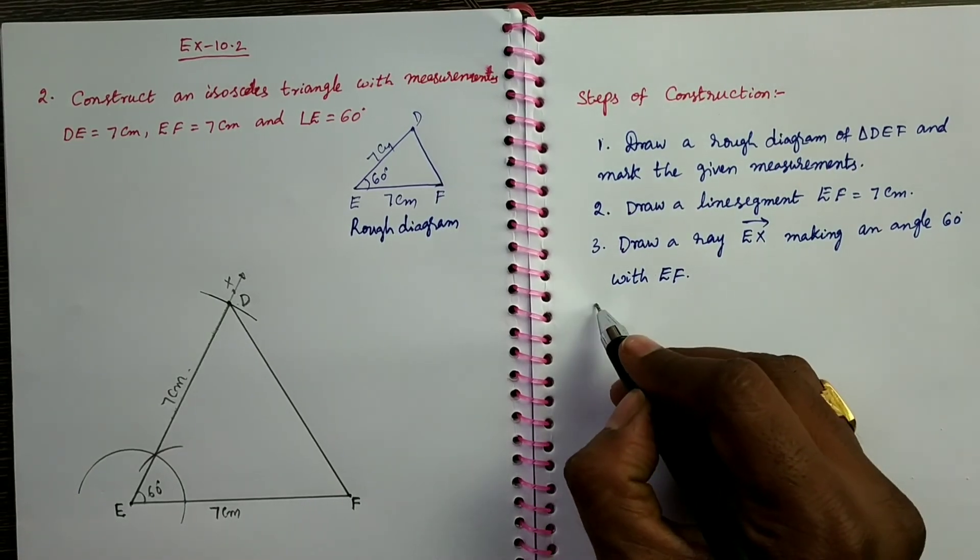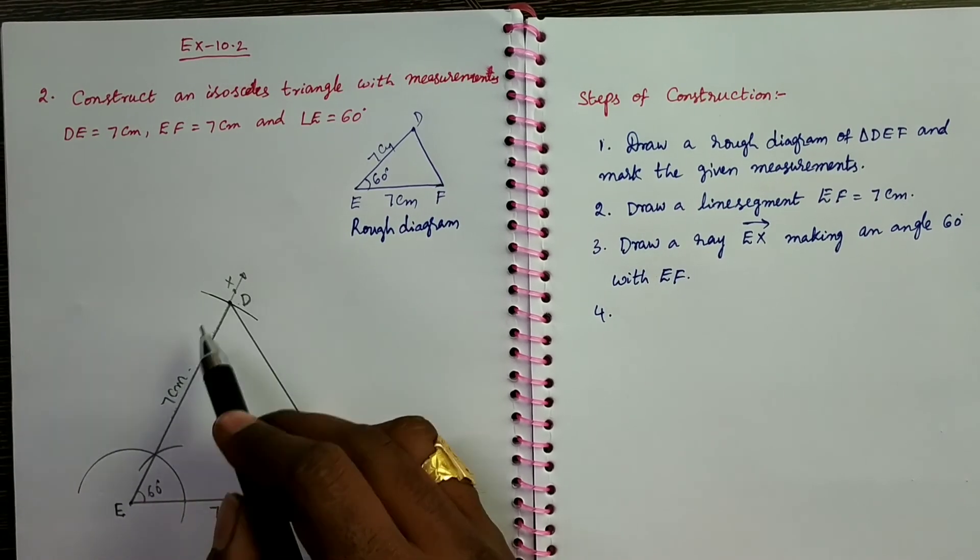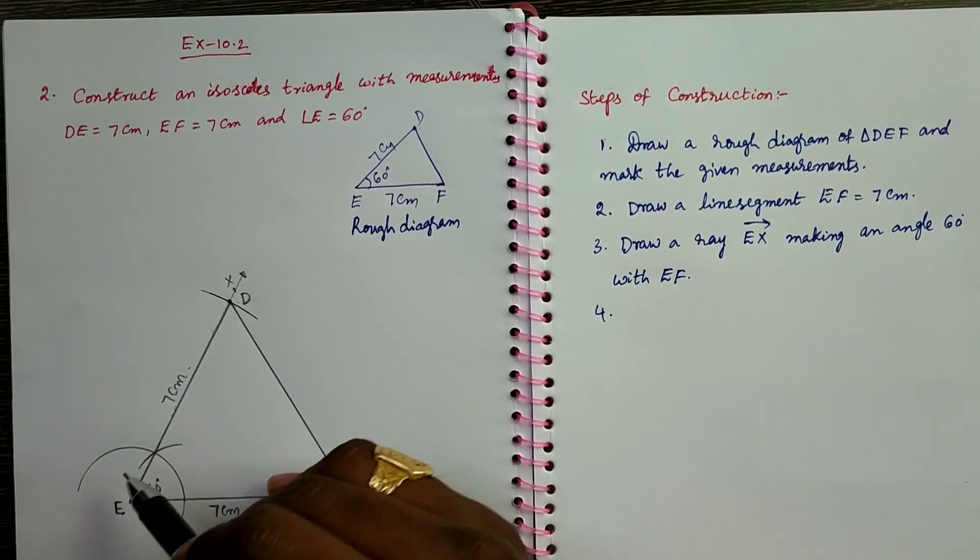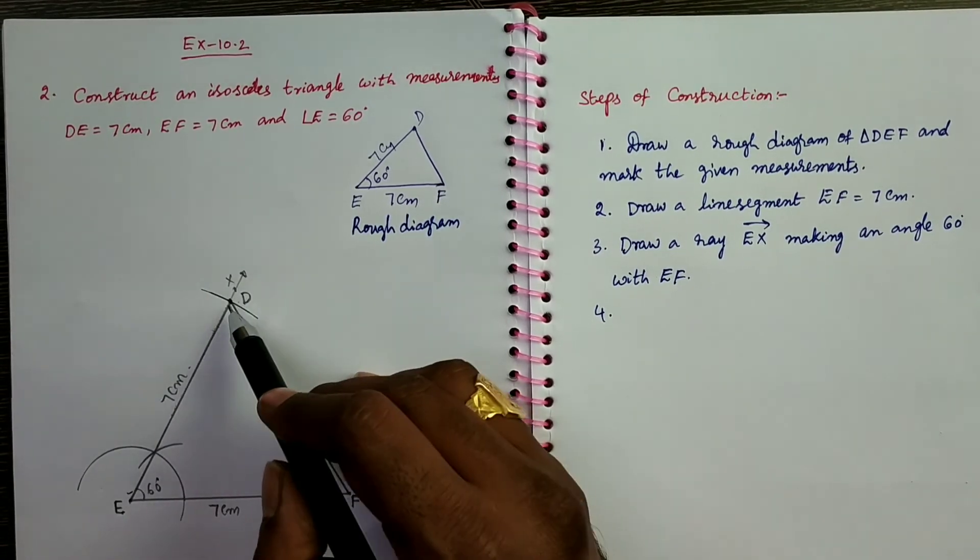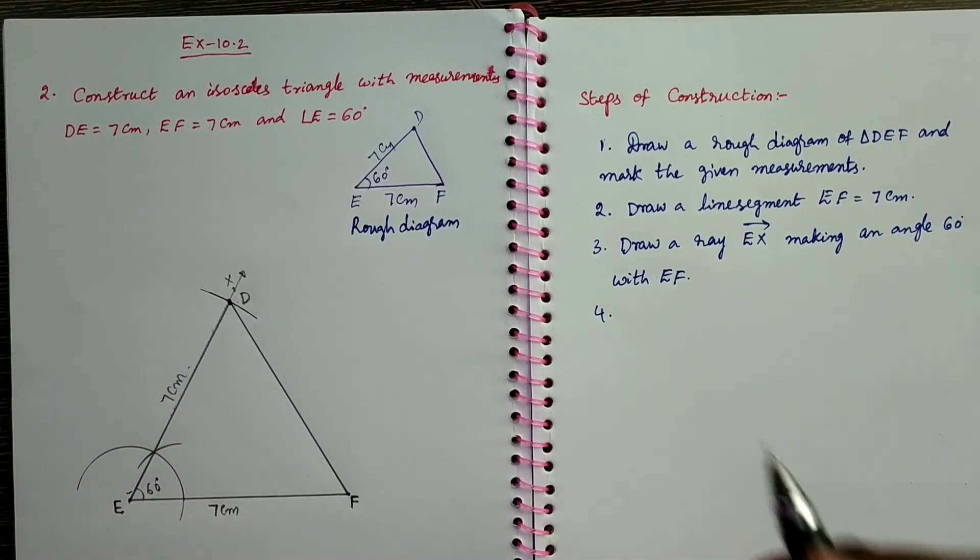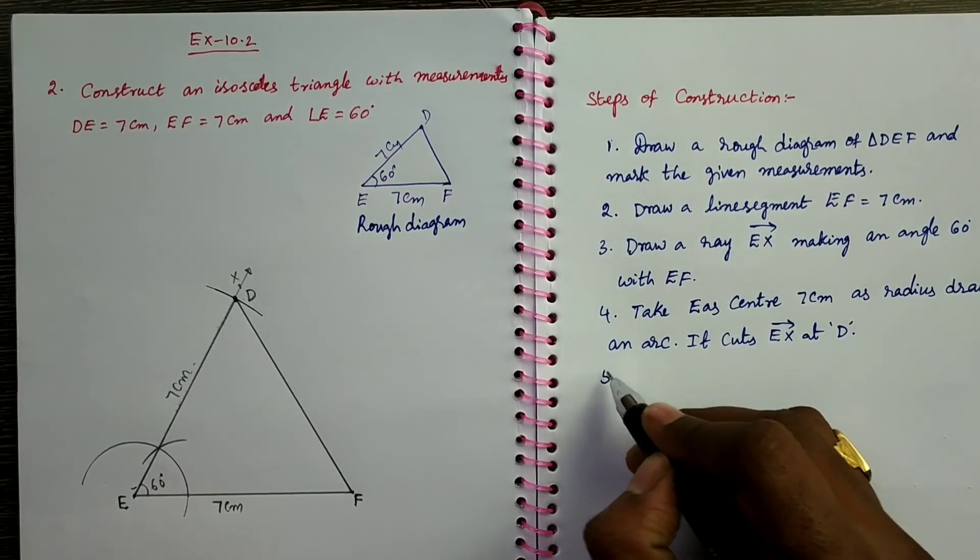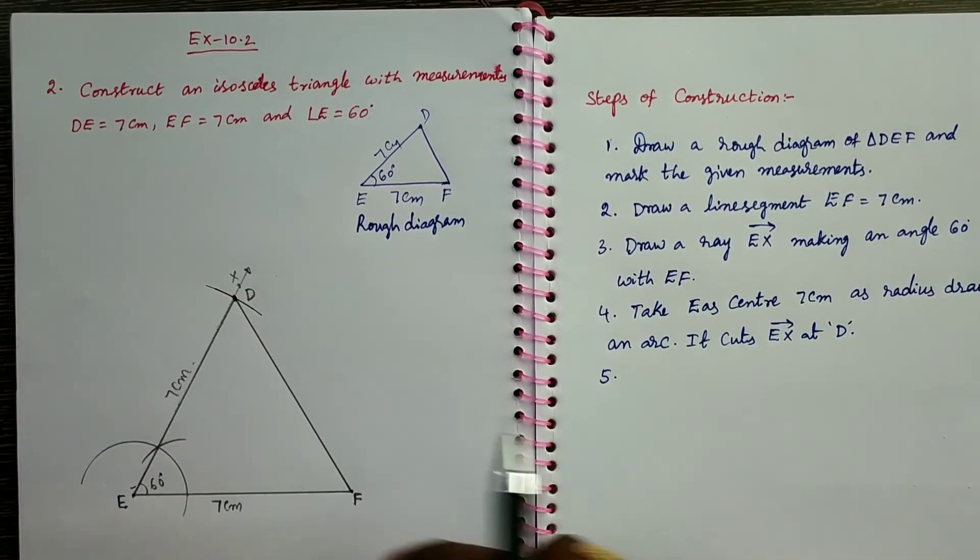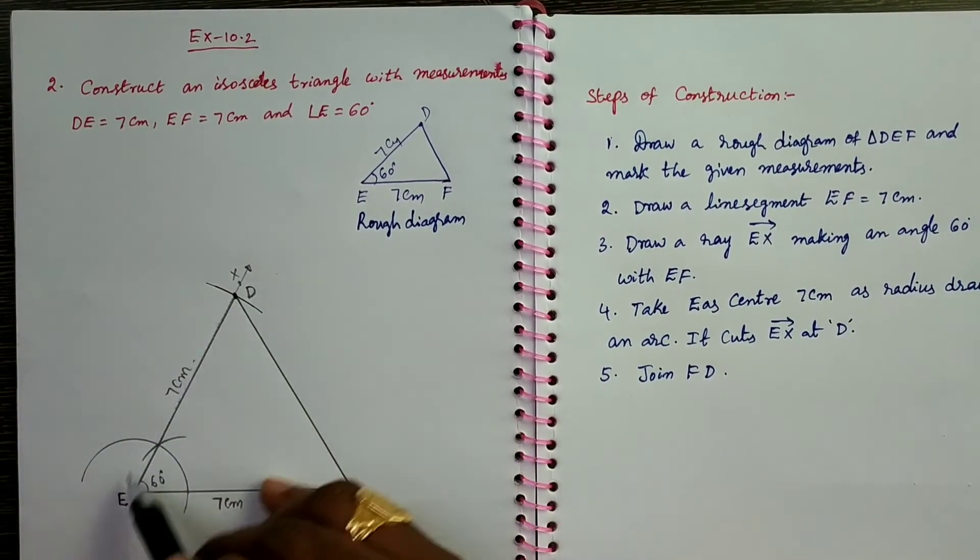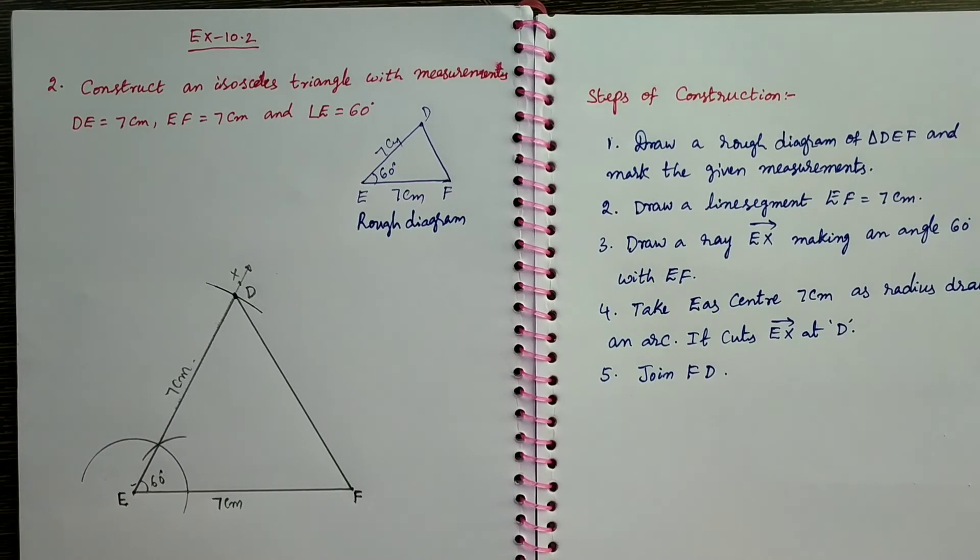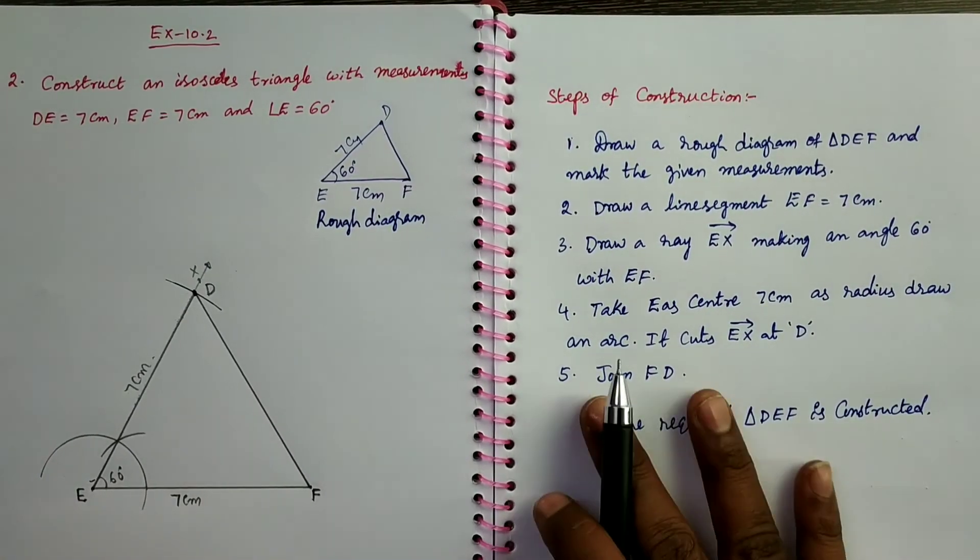Next step is take E as center, 7 centimeters as radius, draw an arc. It cuts the ray EX at D. This point represents D. Now next step is join FD. Therefore the required triangle DEF is constructed. So the construction is completed.